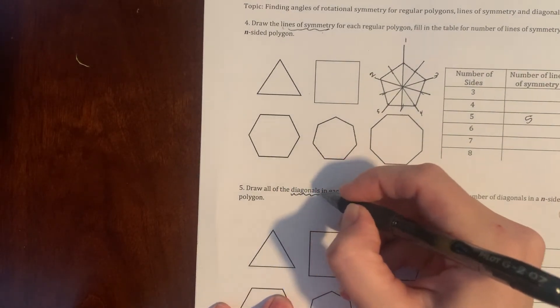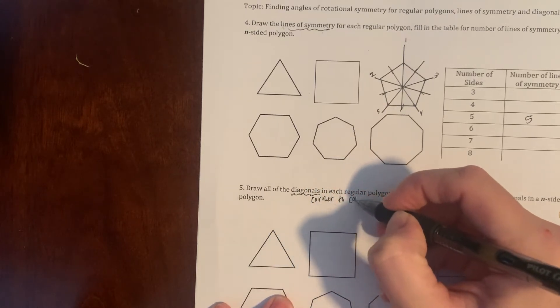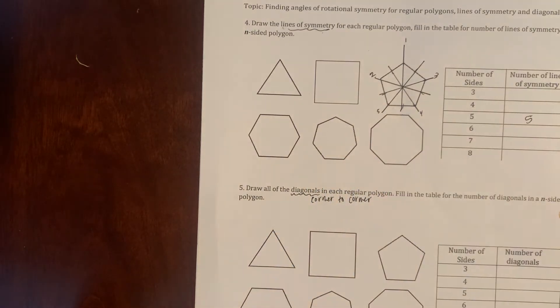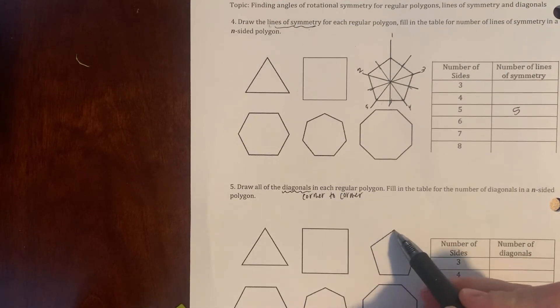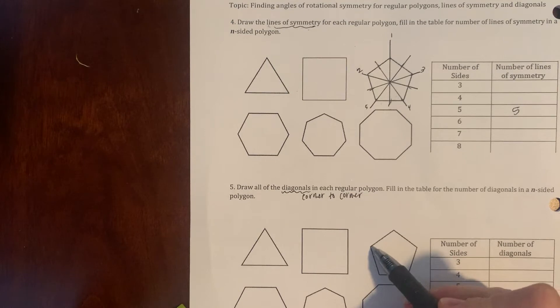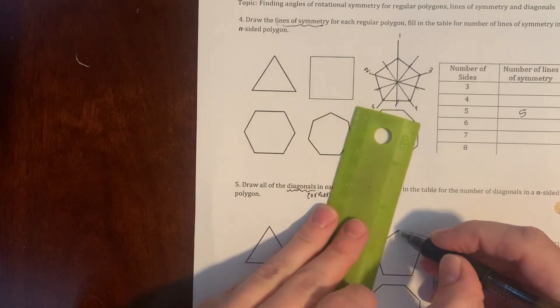That's corner to corner, or vertice to vertice is the geometry way to say that. And then we want to fill in the number. So I'm going to do five again, and I'm going from corner to corner. So if I go from here to here, it's going to be the edge, so I'm going to skip that one. Go from here, this corner to this corner.